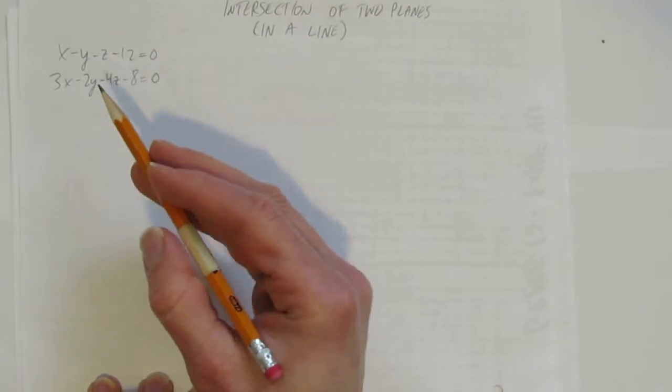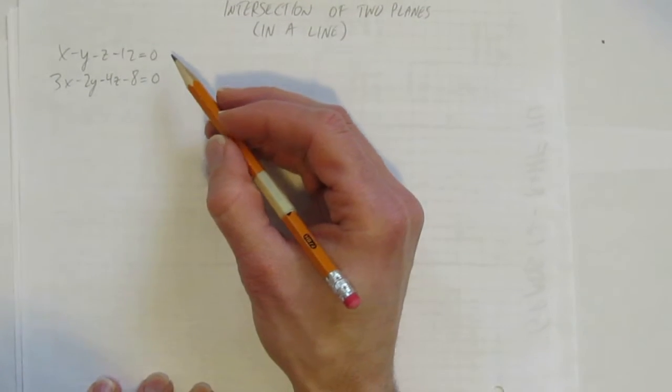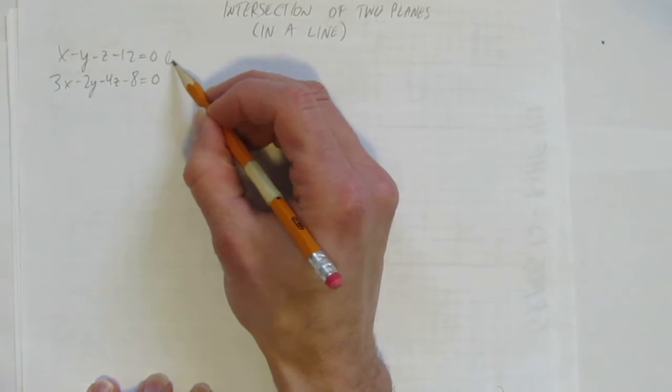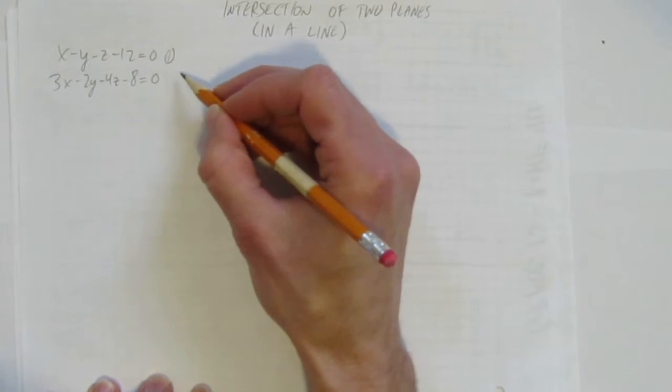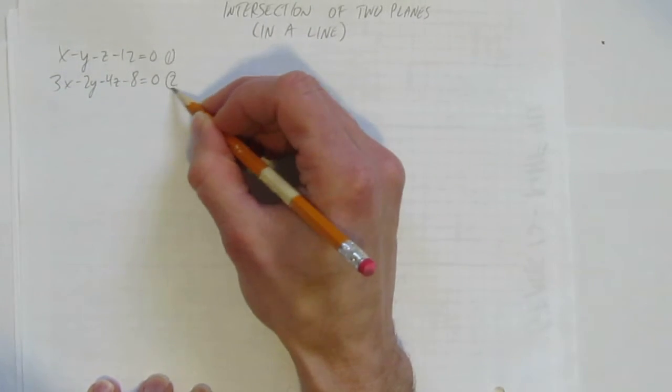So the equations are x minus y minus z minus 12 equals zero, that's equation one. And 3x minus 2y minus 4z minus 8 equals zero, that's equation two.